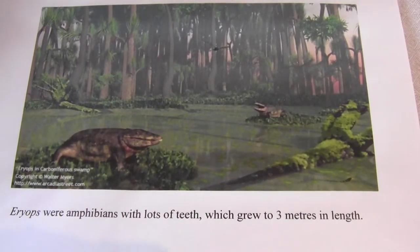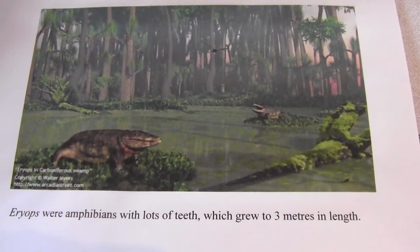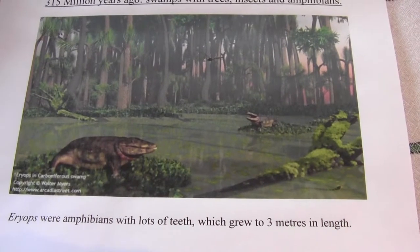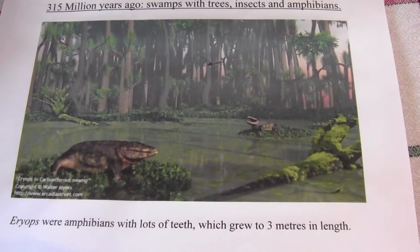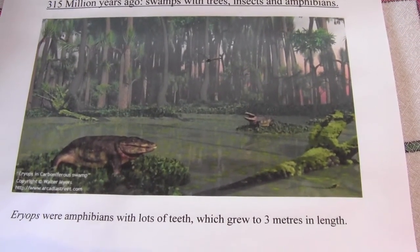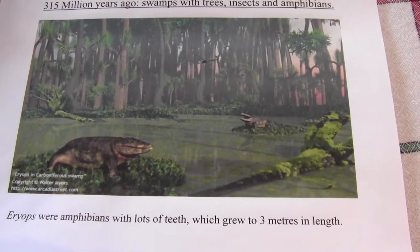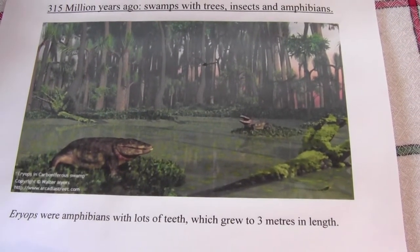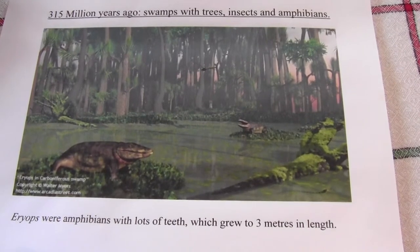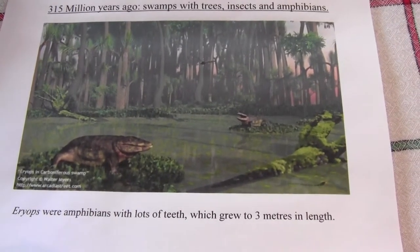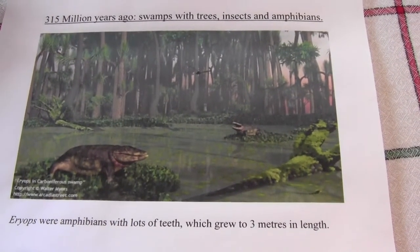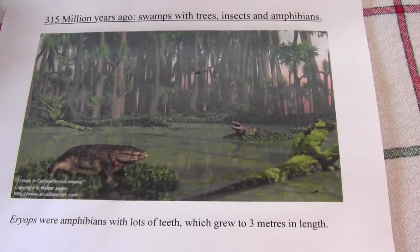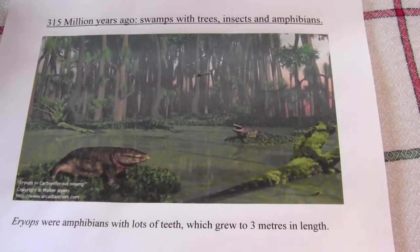Eryops were amphibians that grew to about 3 metres in length and had lots of teeth. They were almost like crocodiles or alligators today, except that they were amphibious — closely related to salamanders, frogs, or newts.